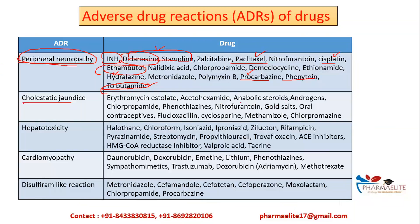For cholestatic jaundice, a large number of drugs are involved — largely steroids, androgens, and anabolic steroids, as well as oral contraceptives. Chlorpropamide is notable because when studied separately, you'll find it causes peripheral neuropathy and cholestatic jaundice. So when doing this drug separately, you may read two ADRs, but here we are grouping them together for easier memorization.